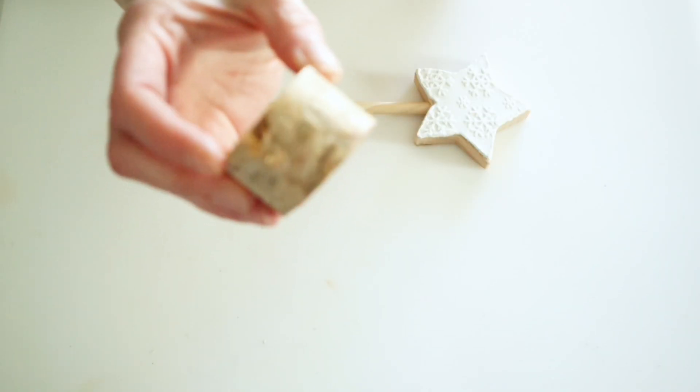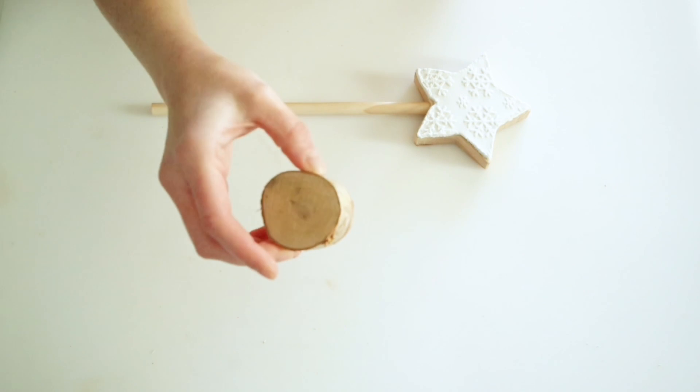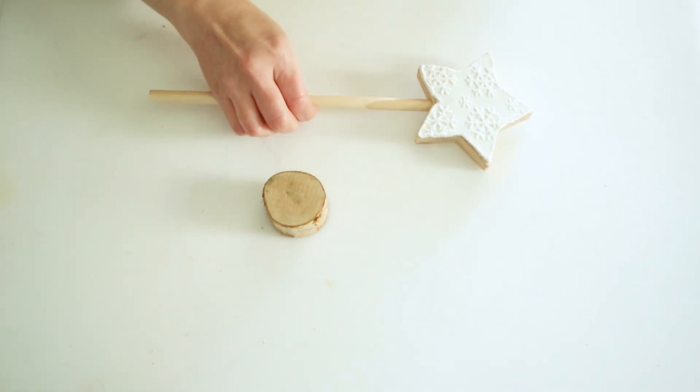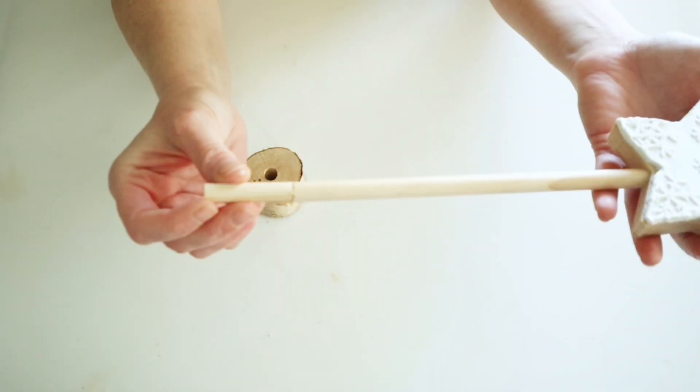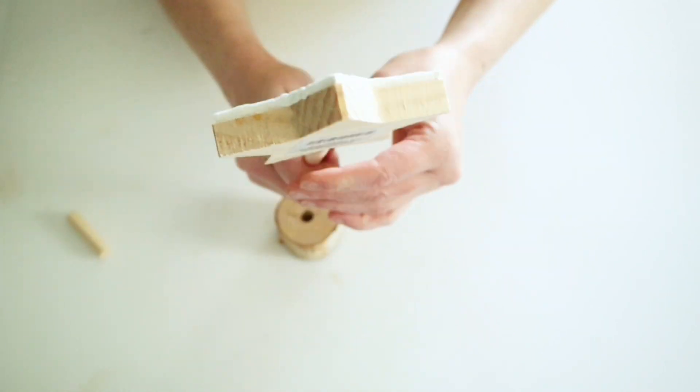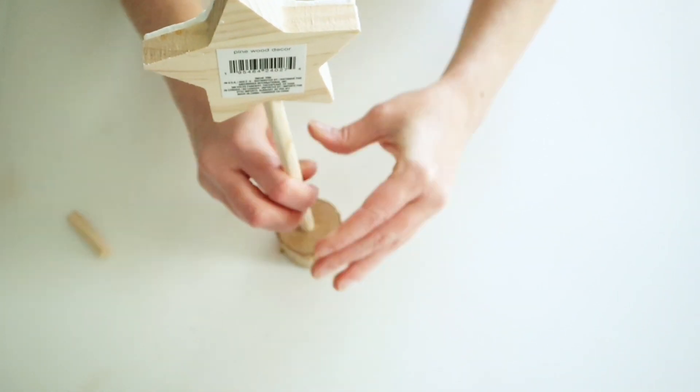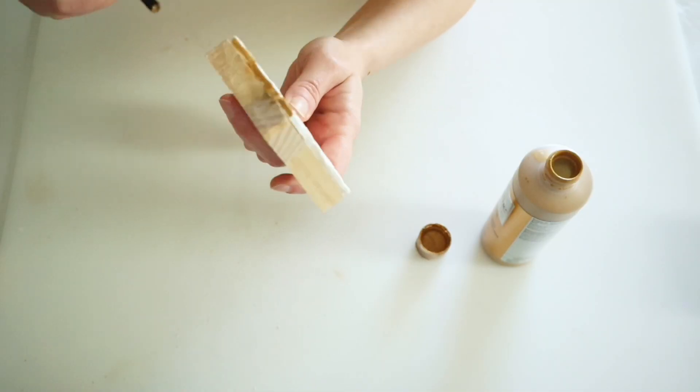I'm going to be using one of these little birch wood pieces from Dollar Tree for the stand and I went ahead and just drilled a hole down in the center of this just big enough to fit the dowel in and I did end up cutting some of that dowel off because I just thought it was a little too tall.